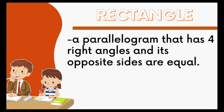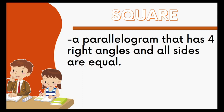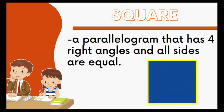How about rectangle? A rectangle is a parallelogram that has four right angles and its opposite sides are equal. This is an example of a rectangle. Next is the square. A square is a parallelogram that has four right angles and all sides are equal. This is a square — all sides are equal and it has four right angles.